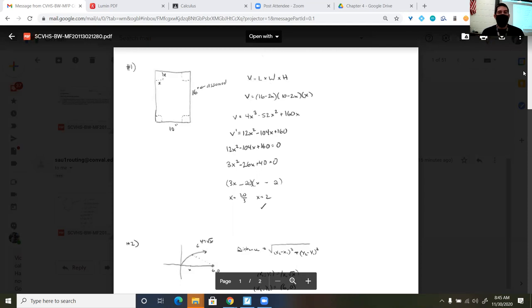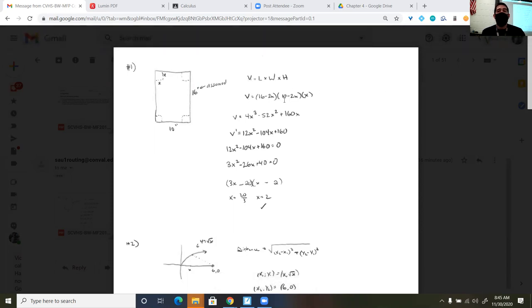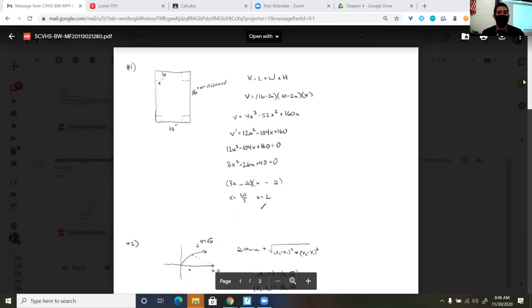So that was length times width times height. And so I knew that one of the measurements would be 16 minus 2x, the other one was 10 minus 2x, and then the third one was the height that would have been a height of x. So I went through and distributed these two binomials together, then distributed the x to each of those three terms, which gave me this cubic trinomial. And then I derived it, set it equal to zero, reduced it, factored it, got my answer of x equals 2.